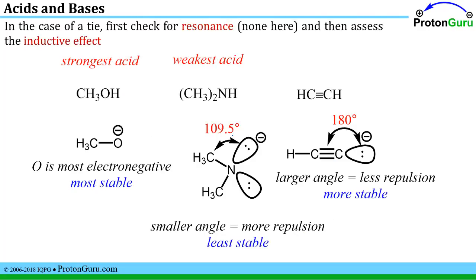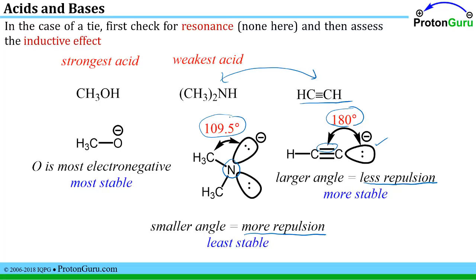To break the tie, we look at resonance and inductive effects. Neither of these tied anions has resonance, so we examine the inductive effect — specifically, what repulsive or attractive forces might make one more or less stable. Since the nitrogen is SP3 hybridized, it has a tetrahedral geometry with bond angles of 109.5 degrees. In the SP hybridized carbon, the angle between the lone pair holding the negative charge and the other bonds is 180 degrees. There is much less repulsion at 180 degrees than at 109.5 degrees, so the nitrogen-centered anion is less stable while the SP carbon-centered anion is more stable.